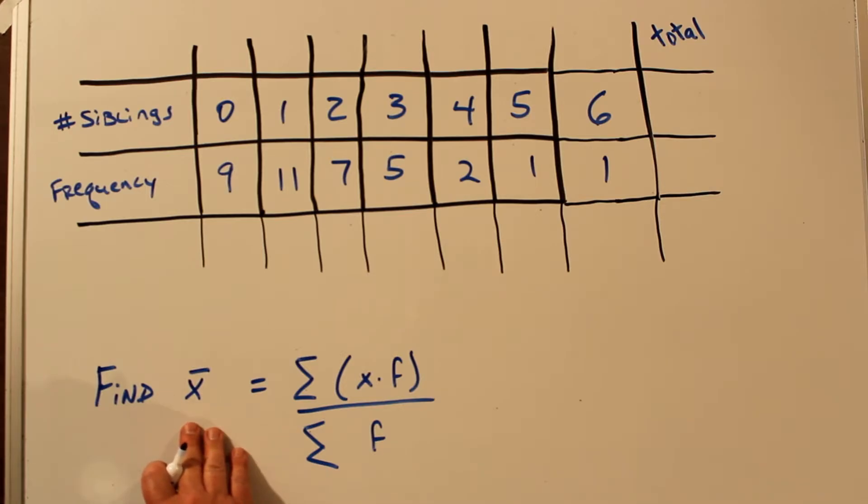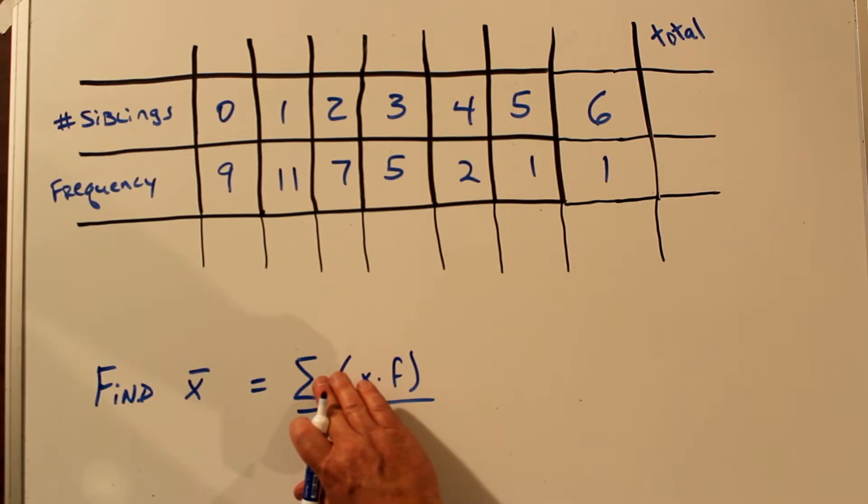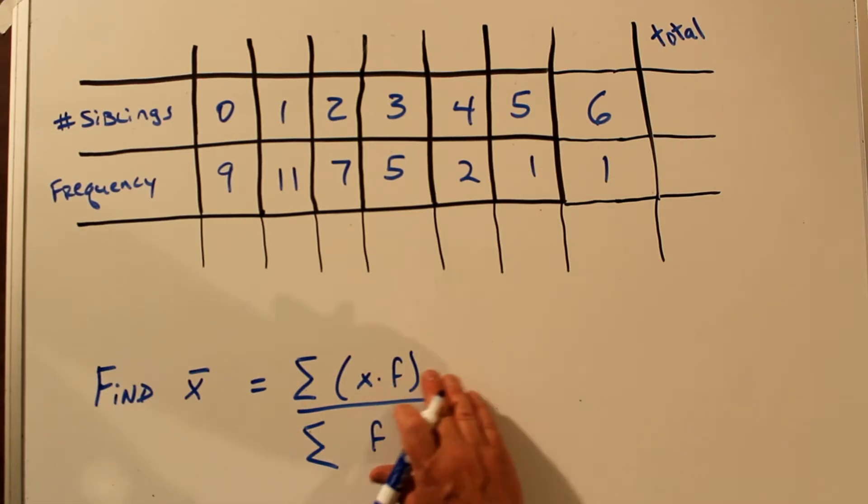This is typical of what you see when a problem says find the mean. It says find X bar for, and then it gives a summation of X times F over a summation of F. This is the capital letter Sigma, and it means the sum, the sum of X times F over the sum of F, the frequency.